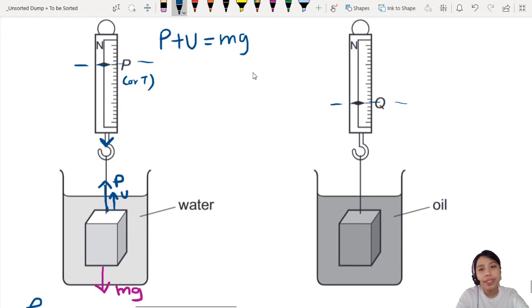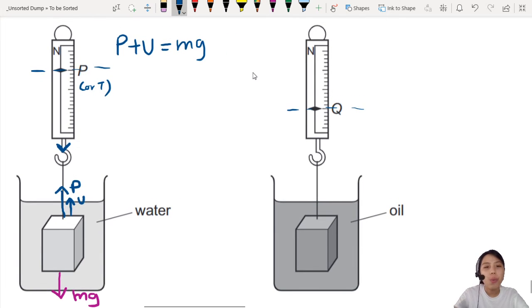If it's in equilibrium, all the upwards force must equal to all the downwards force. So that means P plus U equals to mg for water. Then we do the same thing for oil. Oil is the same thing. Just that this one is Q, U, mg. So for oil, we have Q plus U equals to mg.